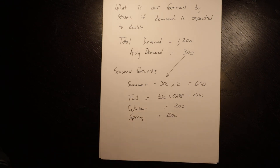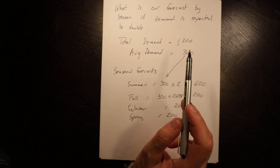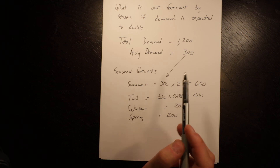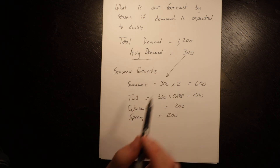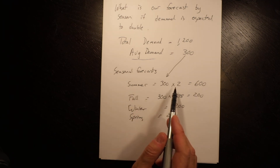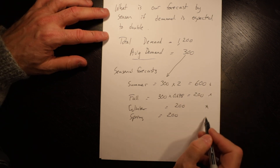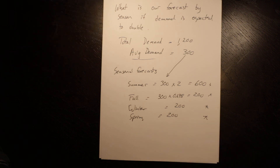The steps in the process are quite simple. First, calculate your average demand. Then divide the actual seasonal demand by the average to get your seasonal index. When you know what your next period's average demand is expected to be, multiply each one of those averages times the seasonal factor to get the forecast for each season. The additive model adds a fixed amount, while the multiplicative model essentially adds or subtracts a percentage amount to reflect differences in seasons.